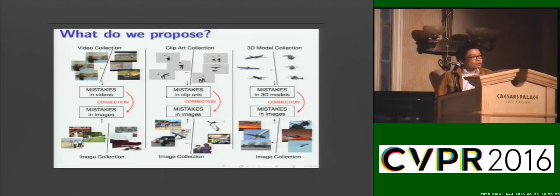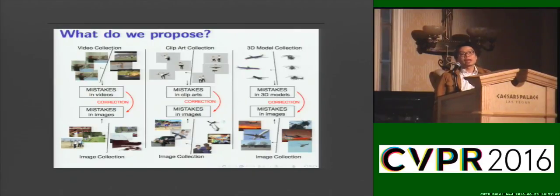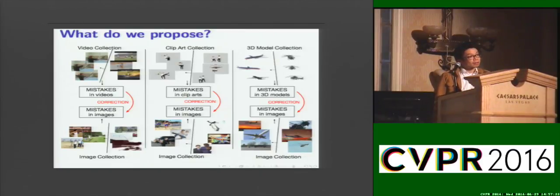We propose for the computer to learn from humans that goes beyond simply providing label annotation. We propose the computer to learn that humans make a lot of mistakes, but humans learn from their mistakes. There is also a wise saying that humans should learn from the mistakes of other humans, and we want the computer to do exactly that in the setting when we have multi-dataset or multi-domain.